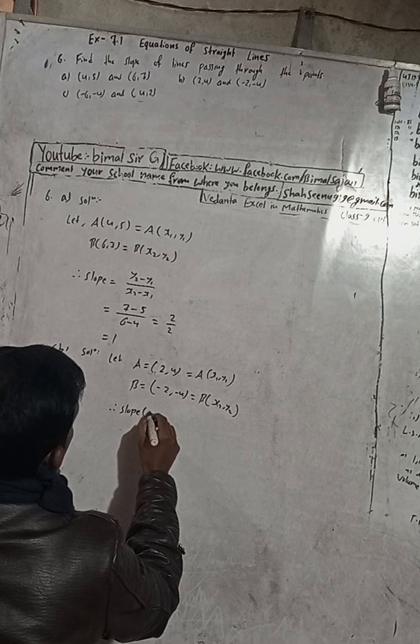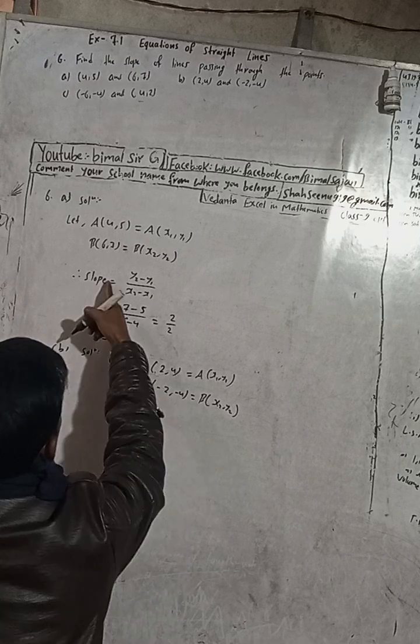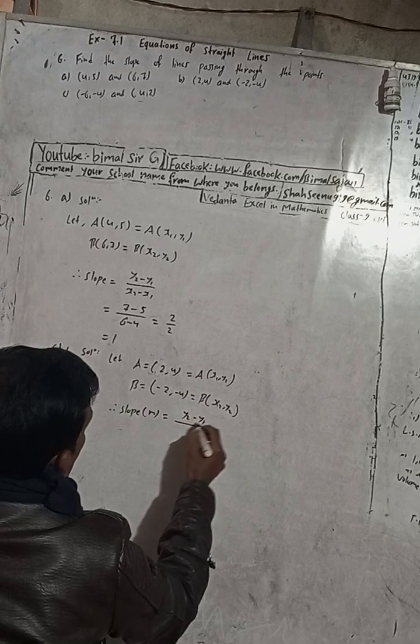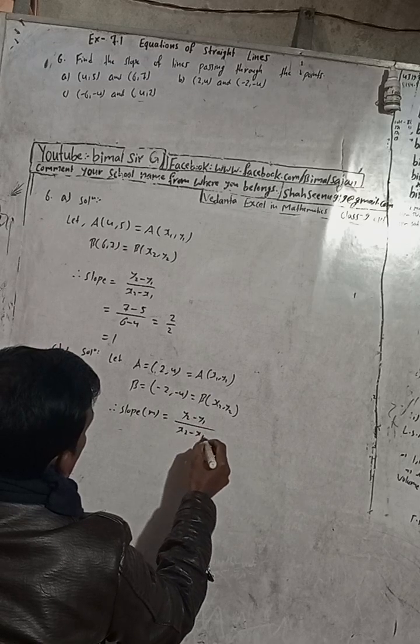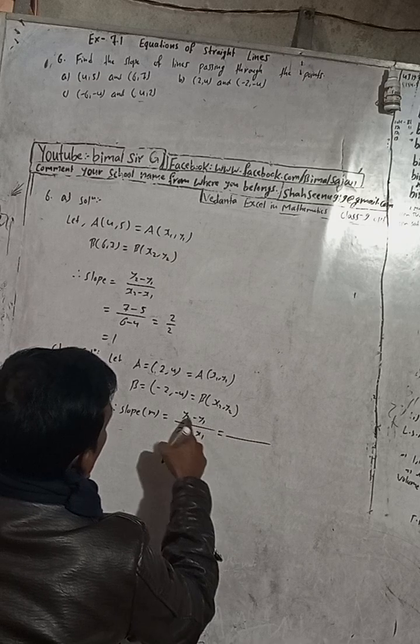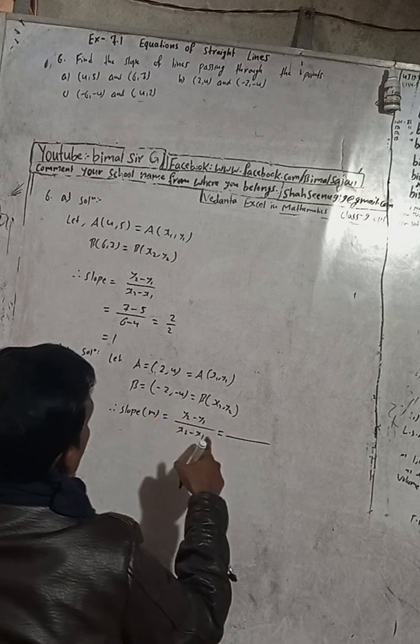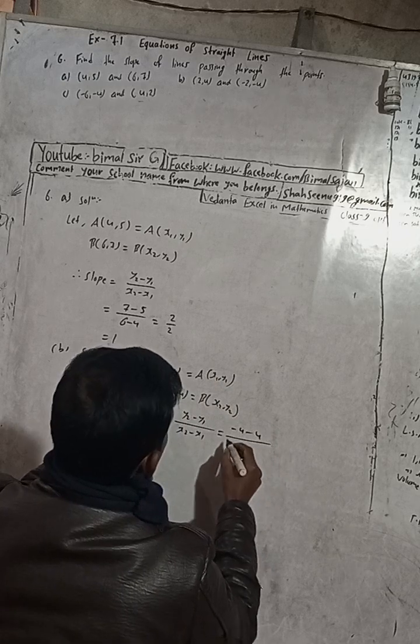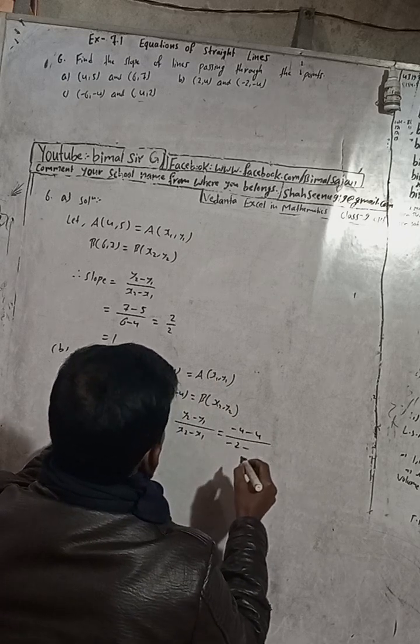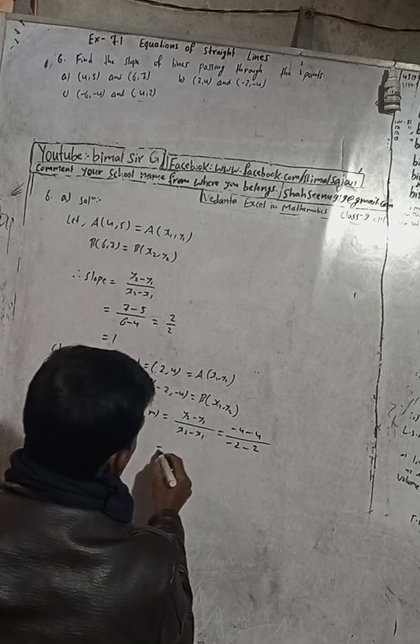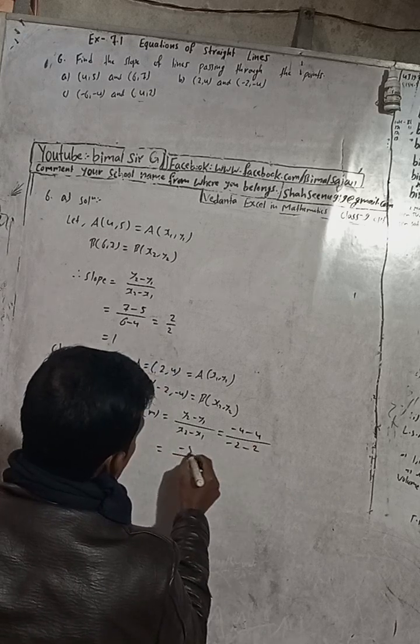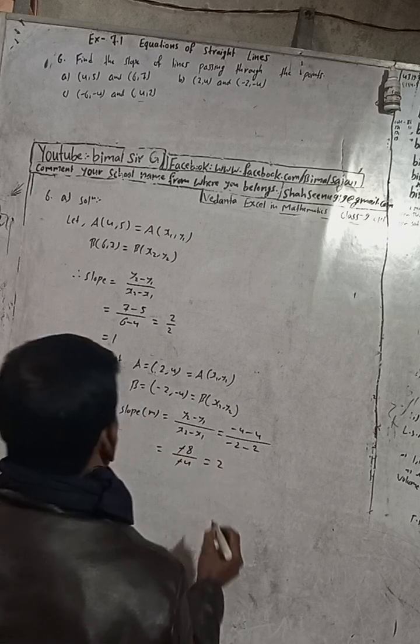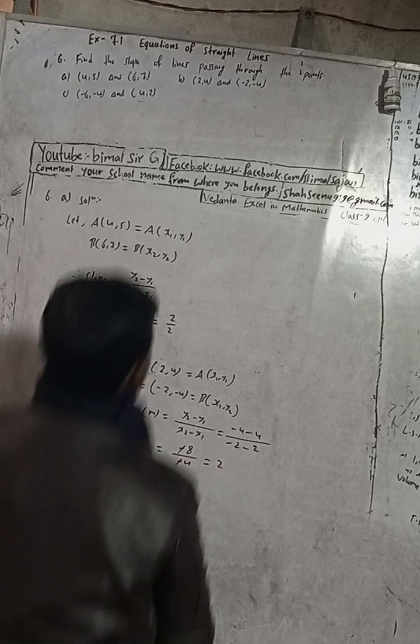Therefore, the slope formula is (y2 - y1) / (x2 - x1). Here y2 is -4, y1 is 4. So -4 minus 4 equals -8. And x2 is -2, x1 is 2, so -2 minus 2 equals -4. Therefore -8 / -4, the negatives cancel, equals 2. The slope is equal to 2.